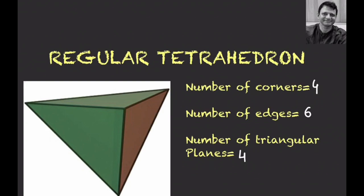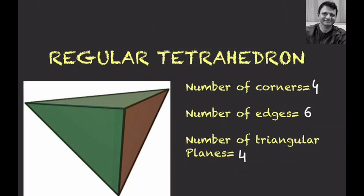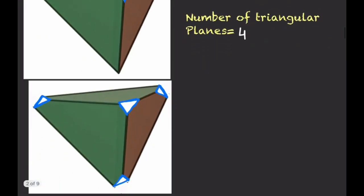Now if I try to truncate this regular tetrahedron — the meaning of truncation is cutting the vertices or corners of a geometry by a plane. For example, at the top vertex, truncating means cutting that vertex by a plane. Since three lines meet at this vertex, cutting it by a plane results in the formation of an equilateral triangle at that vertex.